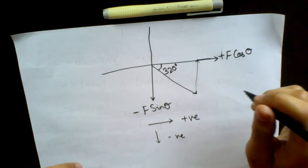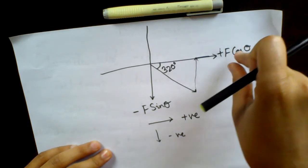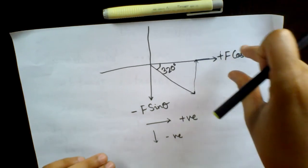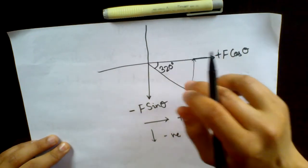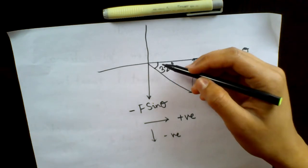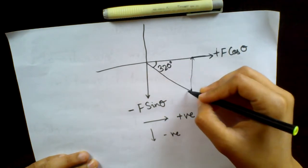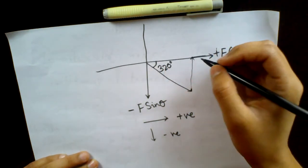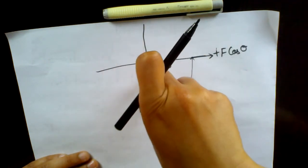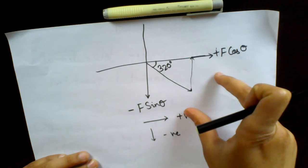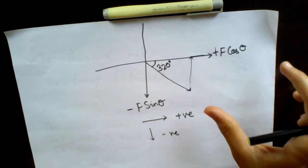A lot of you might be confused as to why this angle is taken as F cos theta and why this angle is taken as F sin theta. In all the examples before this, I was taking the angle which was making an angle with the x-axis. However, if you have an example in which an angle is made with the y-axis, in that case it will differ — this will become F cos theta and that will become F sin theta. Let me show you this with an example.